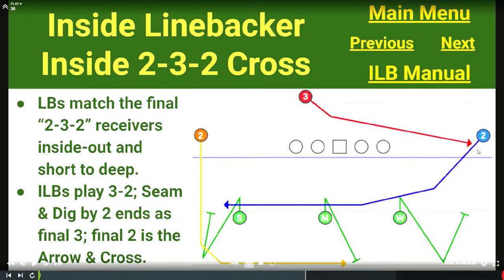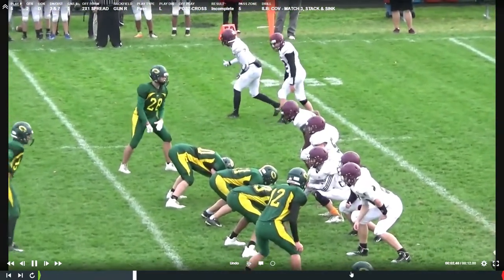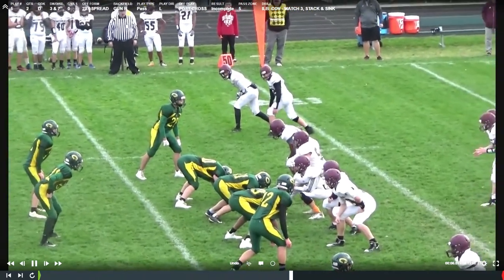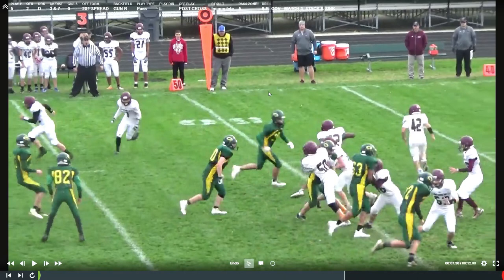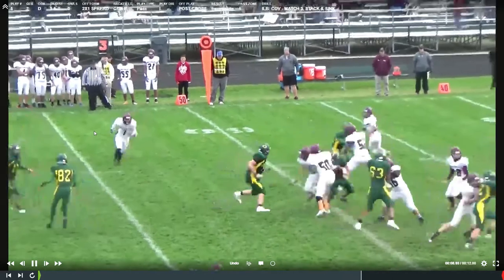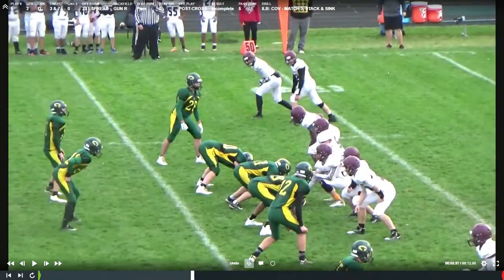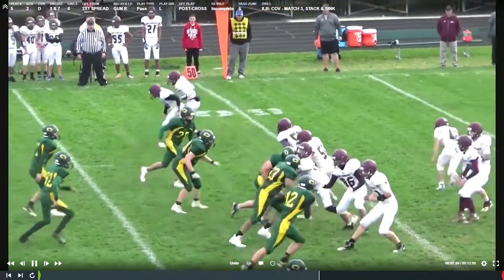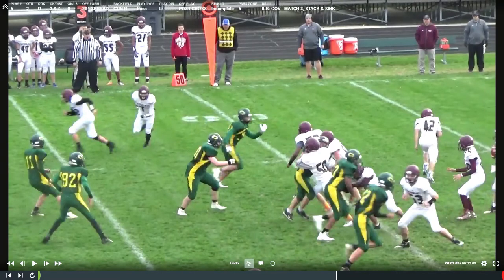Inside linebackers play three-to-two. Three goes away, so I snap my eyes to number two. Number two crosses — if I drop enough depth and understand what offenses are trying to do, I'll leverage inside, the other linebacker leverages outside. We'll get that thing tackled for a four-to-six yard gain. Here — this is JVs a few years ago — running back's out, three's out. You see the linebacker's eyes go immediately outside looking for the final number three. Number seven comes across in a two-back set. The running back barely matters since he blocks.